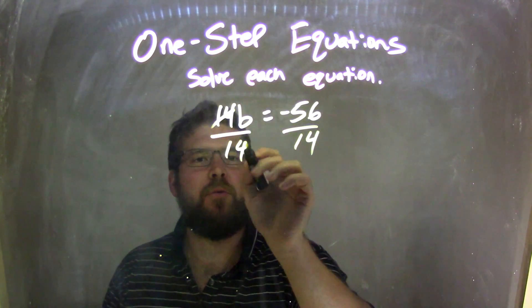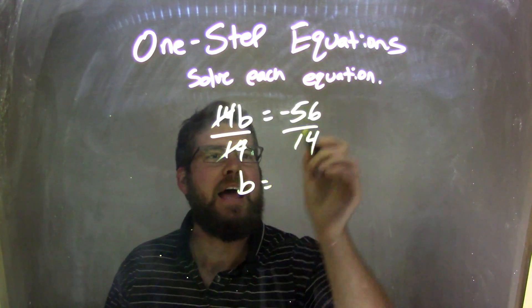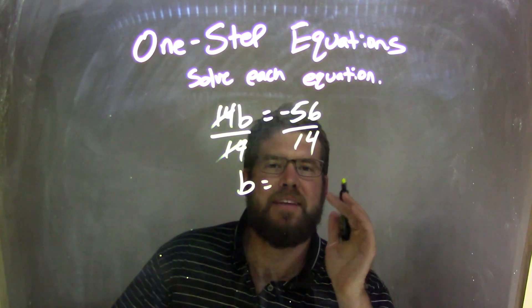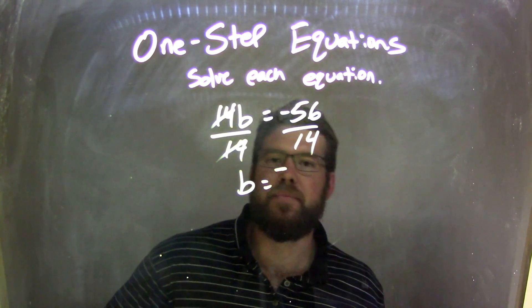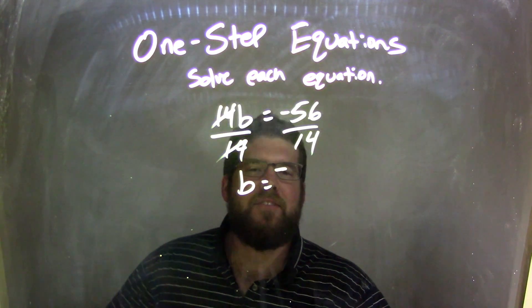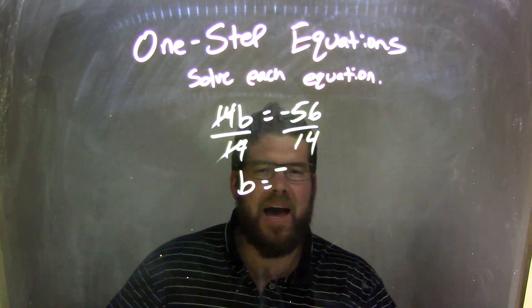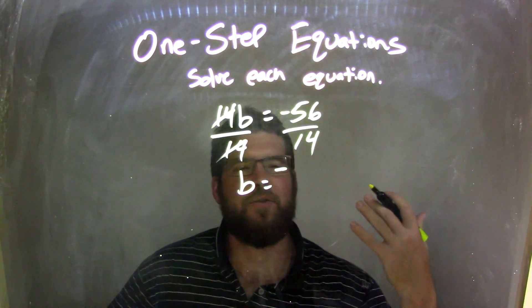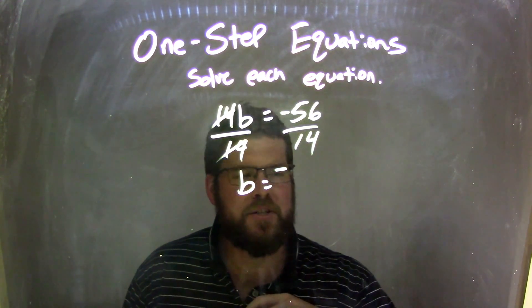Keep in mind here that 14 divided by 14 is just b, and then a negative divided by a positive is a negative, so my final answer has to be negative. So how can I divide 56 divided by 14? I don't know off the top of my head how many times 14 goes into 56, and I don't want to rush to my calculator.